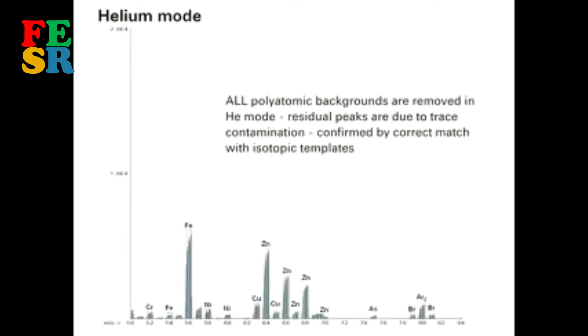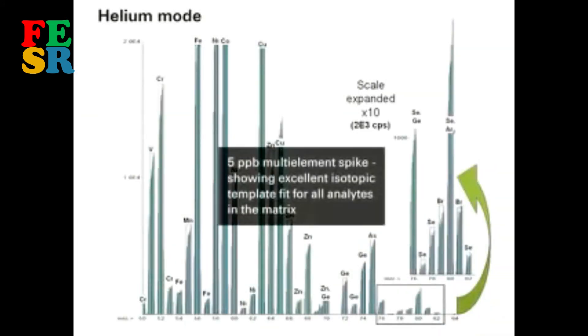Helium mode has removed all polyatomic interferences simultaneously. Finally, adding a five-parts-per-billion multi-element spike confirms all analytes are easily measured in this very complex sample matrix.